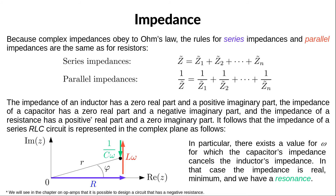We can represent the impedance of an RLC circuit in the complex plane by adding three vectors: a vector to the right for the resistor, an upward vector for the inductor, and a downward vector for the capacitor. The inductor's vector decreases when omega decreases, while the capacitor's vector increases. There exists a particular value of omega for which the two vertical vectors cancel out and the resulting impedance is minimum and equal to the resistance — that's when we have resonance.